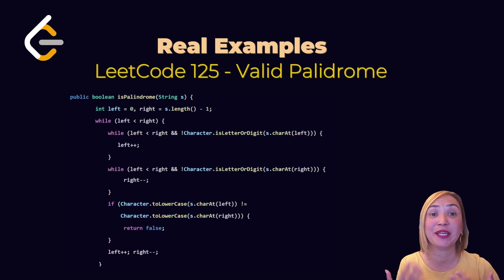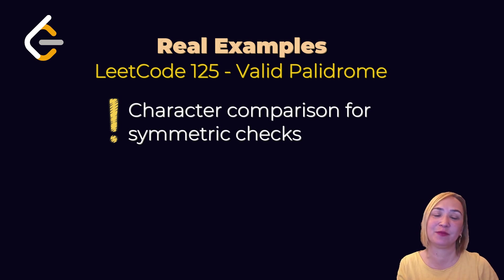Valid palindrome: Compare left and right characters. Define two pointers, left and right. While left less than right, continue operation. While left is non-alphanumeric character, increment left. While right is non-alphanumeric character, increment right. Compare their lower cases to each other. If they are not equal, return false. Continue to compare characters while two pointers meet in the middle or cross each other. Character comparison for symmetric check.